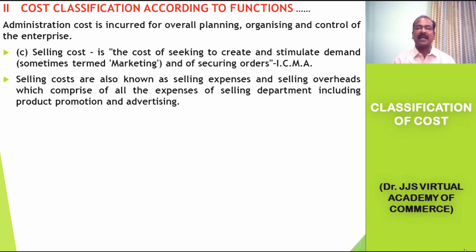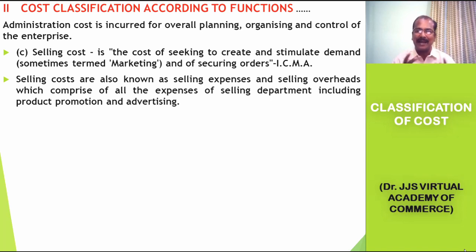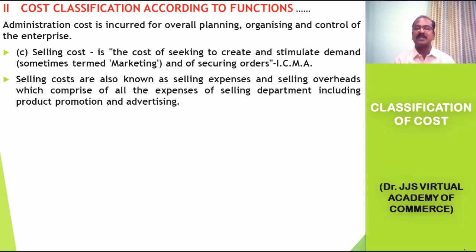The third type of cost according to functions is selling cost. It is a cost of seeking to create and stimulate demand, sometimes termed as marketing activities, and of securing orders. Any expenditure incurred to create demand, attract customers, promote the product, or motivate prospective consumers to buy the product, and expenses related to securing orders, are collectively called selling cost. Selling costs are also known as selling expenses and selling overheads, comprising expenses of the selling department including product promotion, advertising, and other marketing communication.